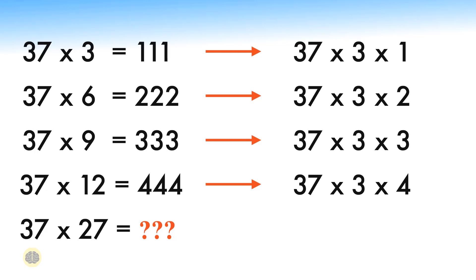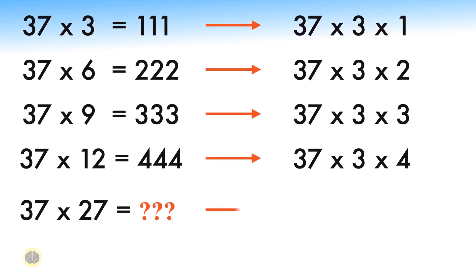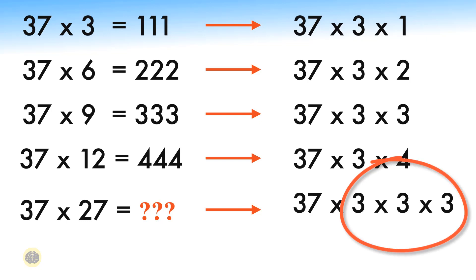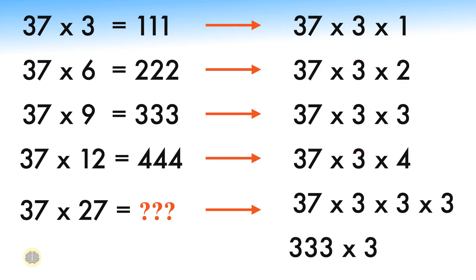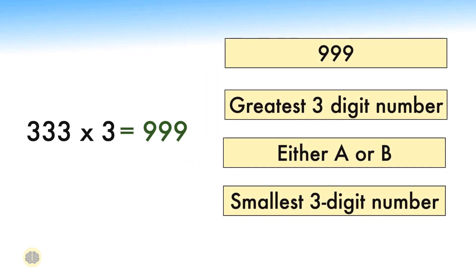Coming back to our question, we need to find 37 times 27. We know that 27 can be written as the product of multiples of 3, which implies 27 equals 3 times 3 times 3. Therefore, 37 times 27 can be modified to 37 times 3 times 3 times 3. Looking at our above equations, we already have 37 times 3 times 3, which equals 333, which implies 37 times 27 becomes 333 times 3. And finally, after solving this, 37 times 27 equals 999.